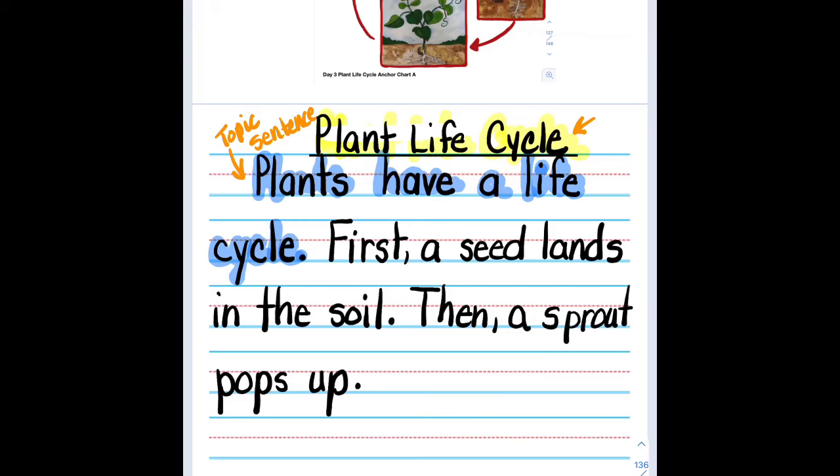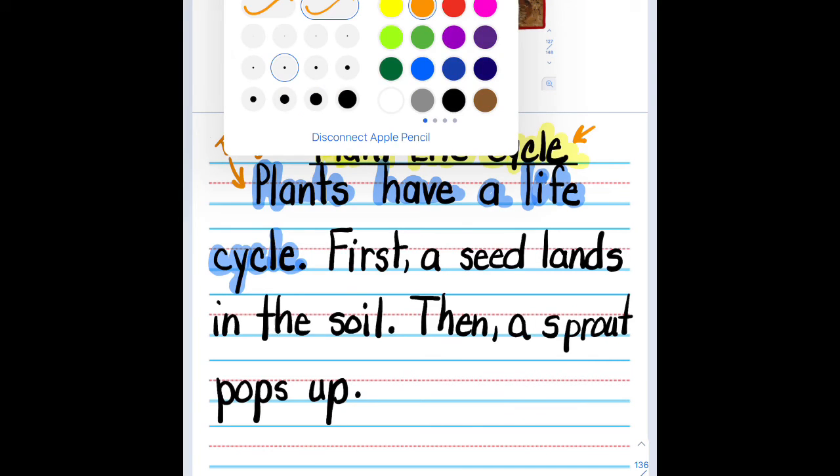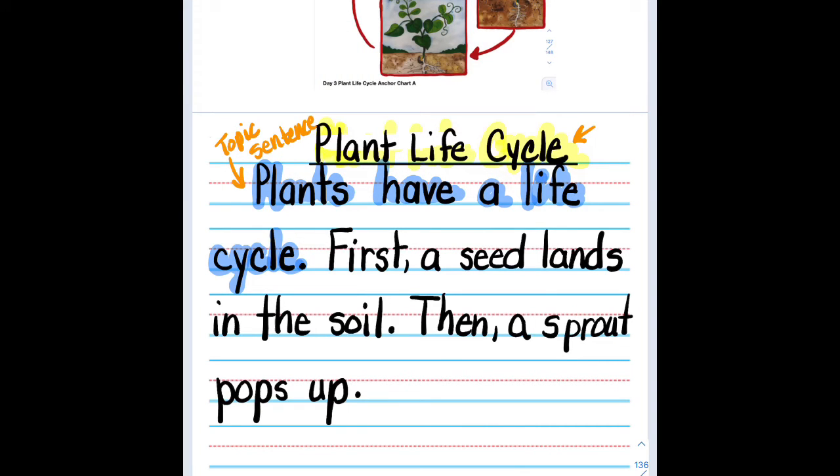And then what? So we've got our sprout. And then we have the seedling. Who has a good sentence for the seedling? I like that. Next. So we have a good sentence for the seedling. So we can help the reader understand the difference between a sprout and a seedling.